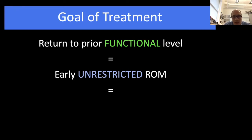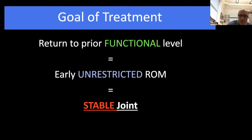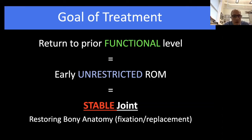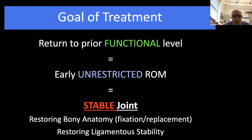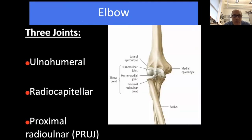You should start early unrestricted range of motion if possible—or at minimum some early range of motion—after seven to ten days maximum for any elbow injury. To achieve that, you need a stable joint. To have a stable joint, you need to restore bony anatomy with fixation or replacement, and also restore ligament stability, which makes the elbow more complicated than some other joints.